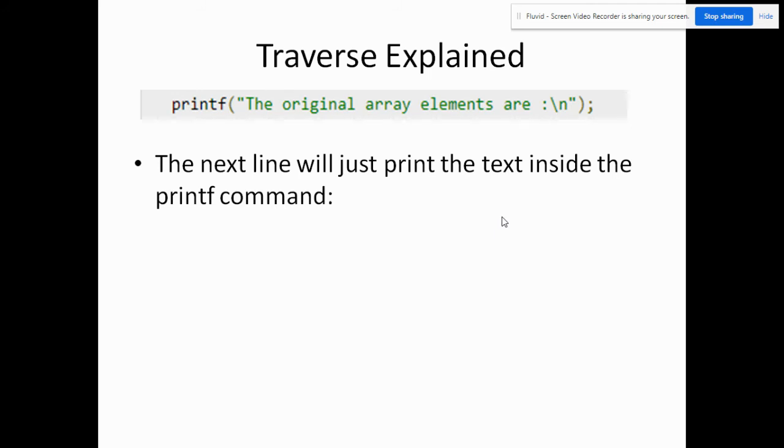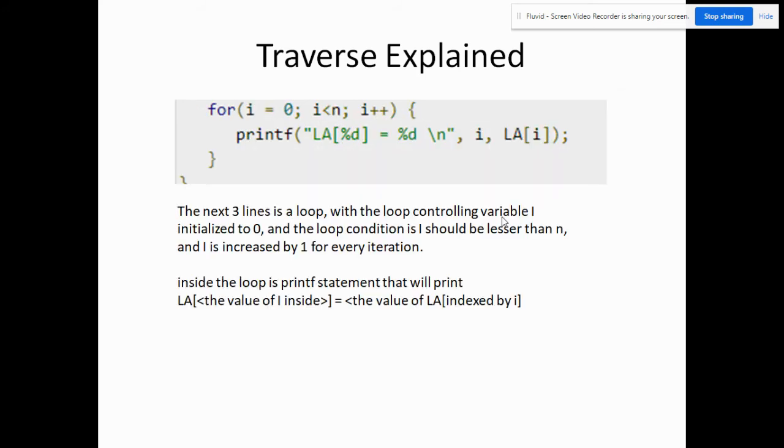After the first three lines, the next line is the printf command. This line will just print the text inside the command: the original array elements are, and then backslash n. That means the printout will go to the next line.